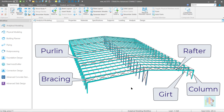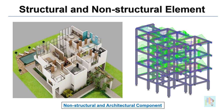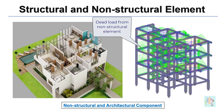When we model any structure for detailed analysis and design, we consider those elements which contribute to the structural stability, safety and performance. For example, we never consider any partition wall, false ceiling or architectural element in the structural model. These elements don't have any significant contribution to the stability of the structure, and modeling them not only increases the modeling time but also increases the effort to interpret results. So we avoid modeling any unnecessary components with negligible structural contribution and consider only the loads coming from these elements.